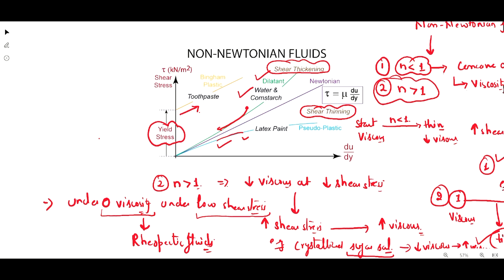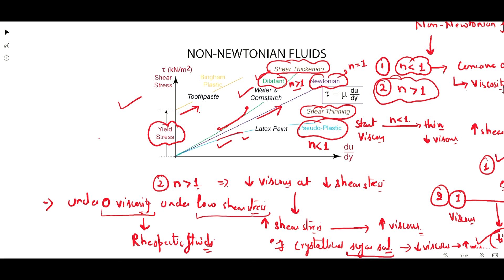This is about the different types of non-Newtonian fluids. This graph is very important because questions can be asked from it. Pseudo-plastic fluids have n less than 1, dilatant fluids have n greater than 1, and Newtonian fluids have n equal to 1 and give a straight line on the graph. That's all for today, thank you.